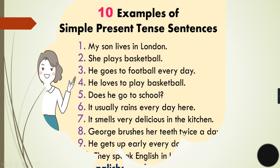Here are 10 simple present tense sentences: My son lives in London. She plays basketball. He goes to football every day. He loves to play basketball. Does he go to school? It usually rains every day here. It smells very delicious in the kitchen. George brushes her teeth twice a day. Now George is brushing her teeth - the word brushes is used because we are talking about an action which is taking place every day. This is a repeated activity. He gets up early every day - again, a repeated action.